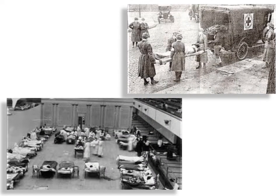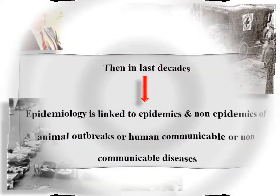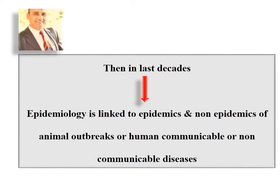These two pictures explain what was going on during the flu pandemic in the 18th century. In later decades, epidemiology became linked to both epidemics and non-epidemics of animal outbreaks or human communicable or non-communicable diseases — such as the rate of tympani in cattle eating green foliage without carminatives being greater than in cattle eating green fodder with carminatives, showing that epidemiology also applies to internal medicine.